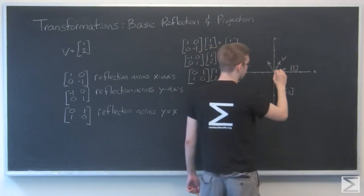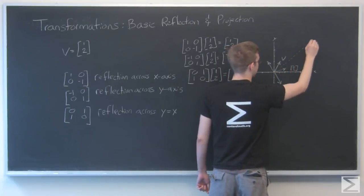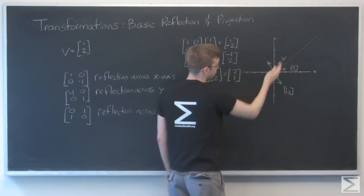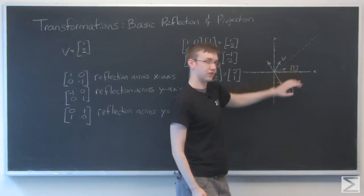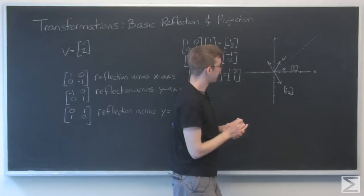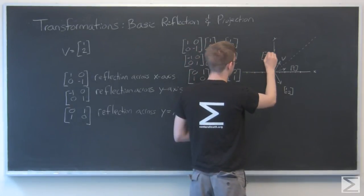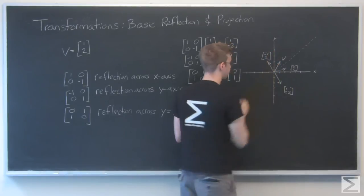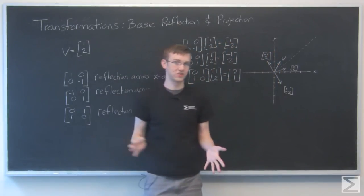So now if we have the line y equals x, which is just a straight line halfway between these two axes, it's like we had a mirror there and this vector is reflected right there. So those are the basic reflections that we're going to look at.